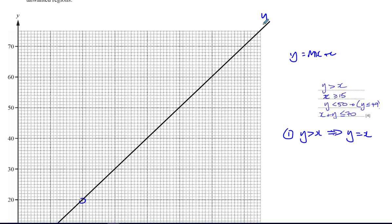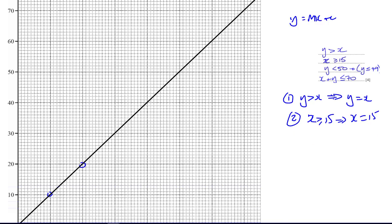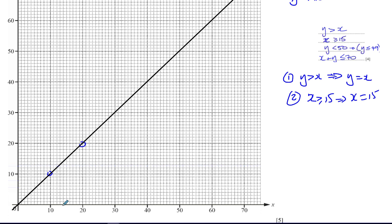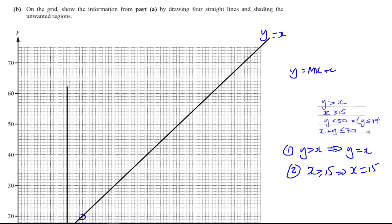After finishing drawing all the lines, I can then do the regions. The second line to draw is from X ≥ 15. The boundary is X = 15, which is a vertical line going through 15 on the X-axis. Each square is 1 unit, so it goes through the point 5 squares away from 10, giving us a vertical line going straight up. That's the line X = 15 — the boundary for that region.